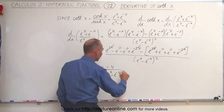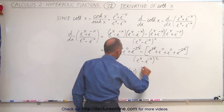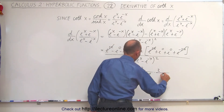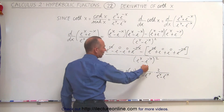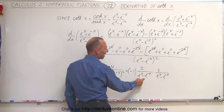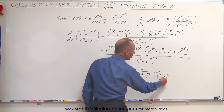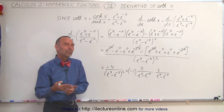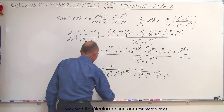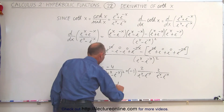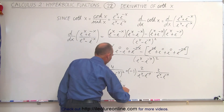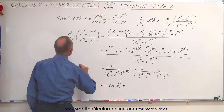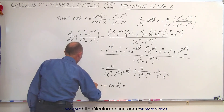This can be written as minus 1 times 2 over (e to the x minus e to the minus x) times 2 over (e to the x minus e to the minus x). Notice that this is the reciprocal of the hyperbolic sine, so this becomes the reciprocal of the hyperbolic sine squared. The reciprocal of the hyperbolic sine is the cosecant, and with the negative sign, this becomes negative hyperbolic cosecant squared of x — which is the derivative of the hyperbolic cotangent of x.